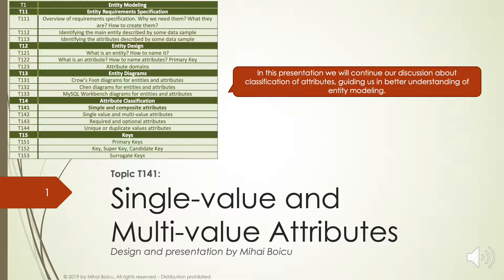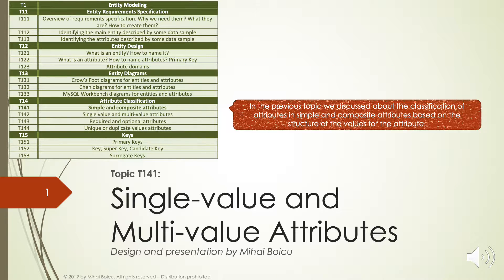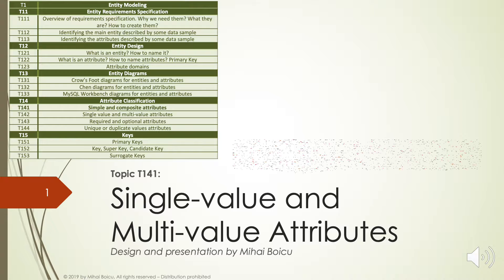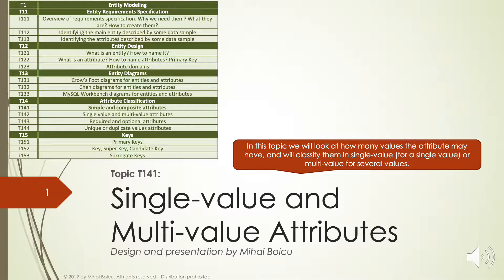In this presentation, we'll continue to discuss the classification of attributes, guiding us in better understanding of entity modeling. In the previous topic, we discussed the classification of attributes into simple and composite attributes, based on the structure of the values for the attribute. In this topic, we'll look at how many values an attribute may have, and classify them as single-value or multi-value.